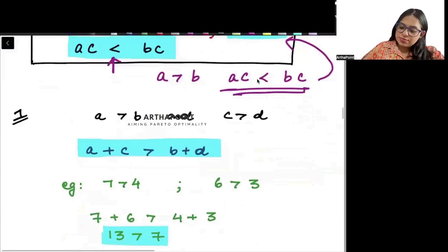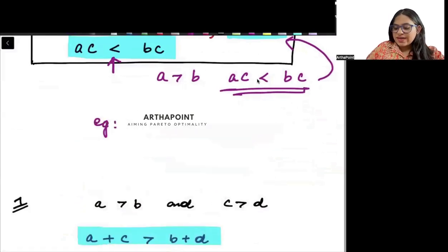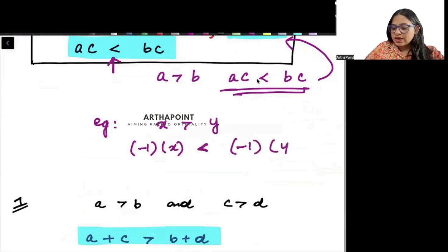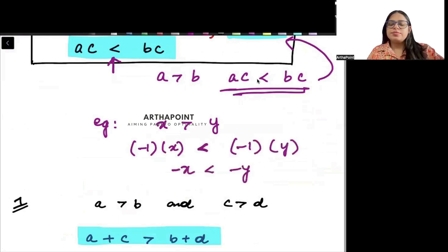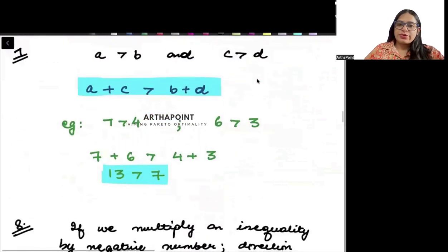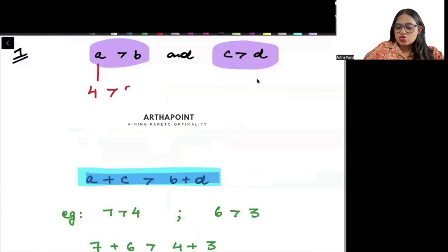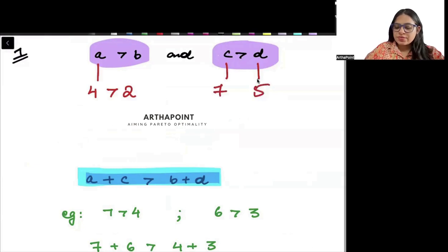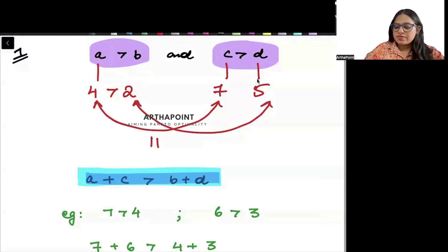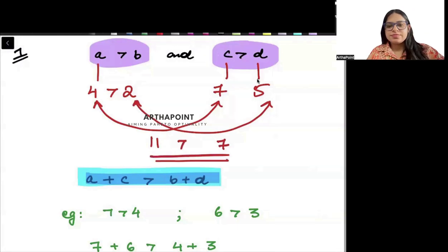For example, if x is greater than y and I multiply by minus 1 on both sides, I will have minus x less than minus y — the sign reverses. Next rule: if A is greater than B and C is greater than D, then A plus C will be greater than B plus D. Example: A is 4, B is 2, C is 7, D is 5. A plus C is 11, B plus D is 7, and 11 is greater than 7. Proved.